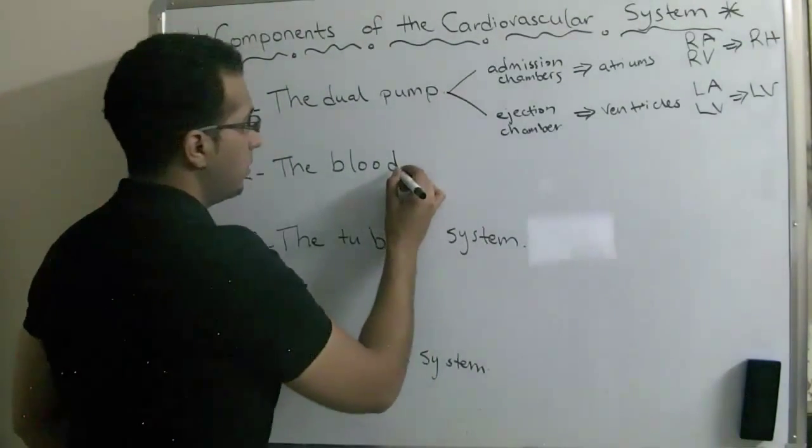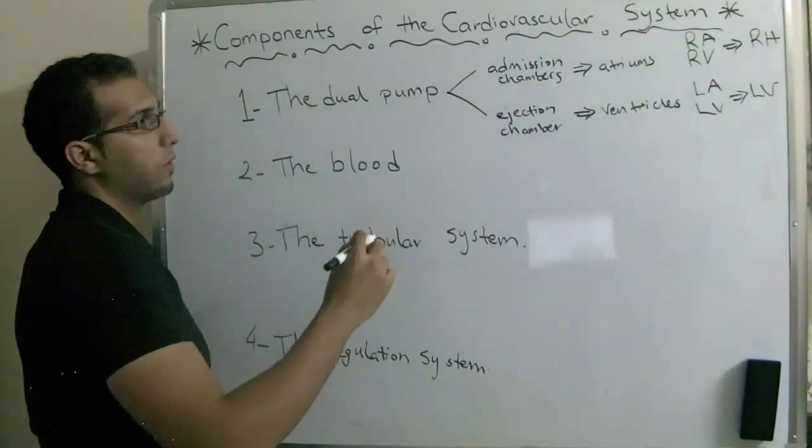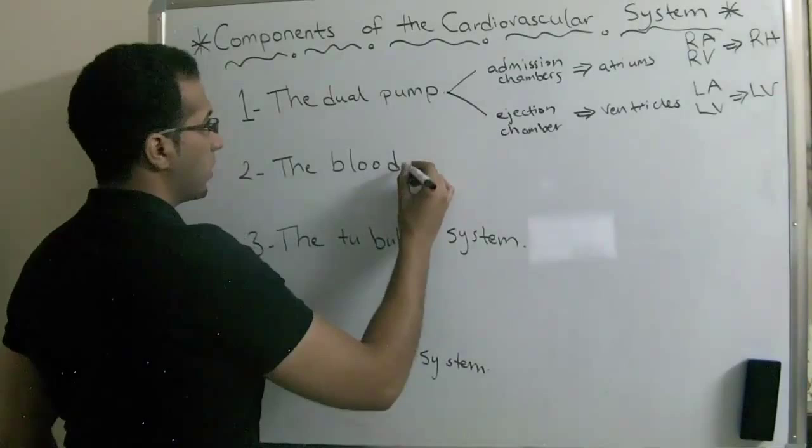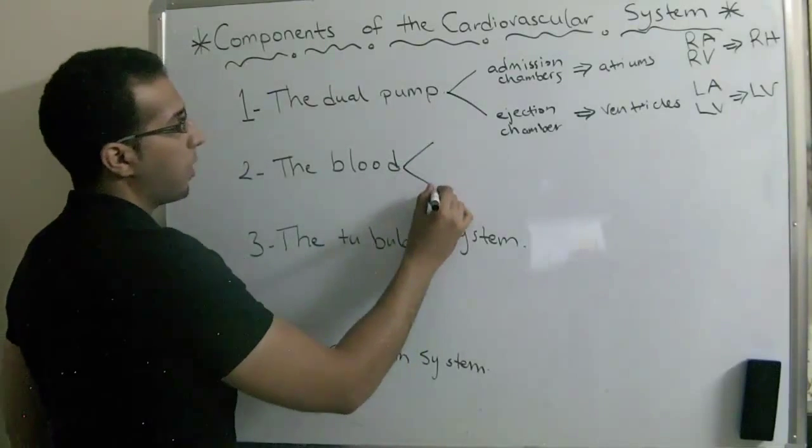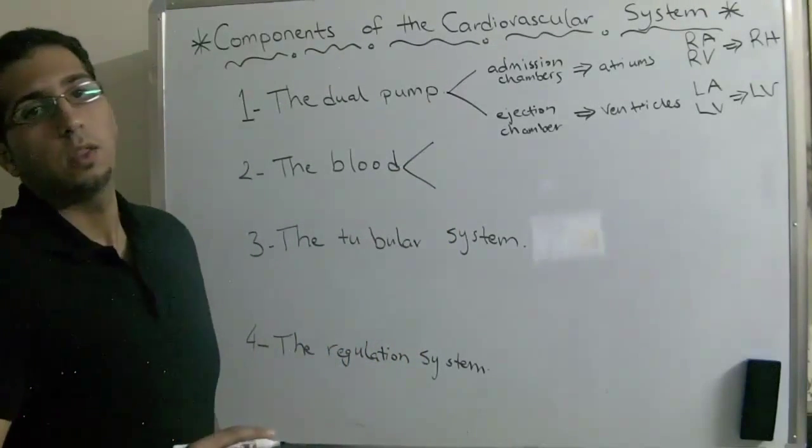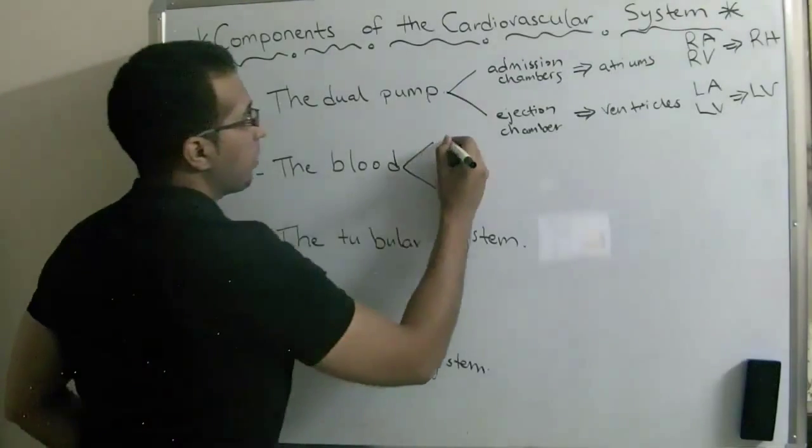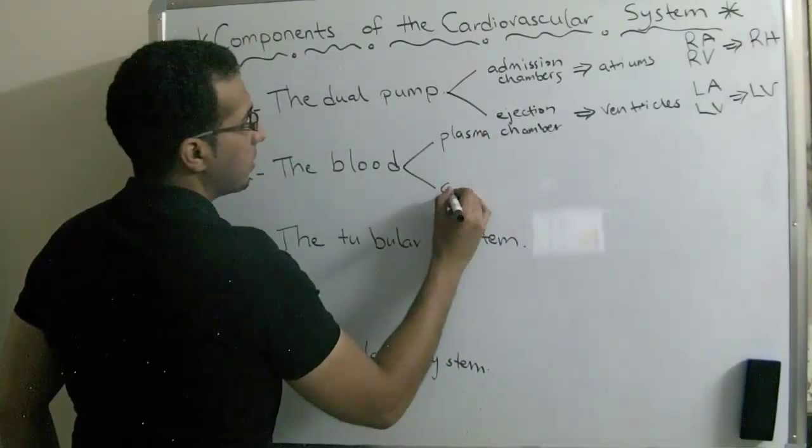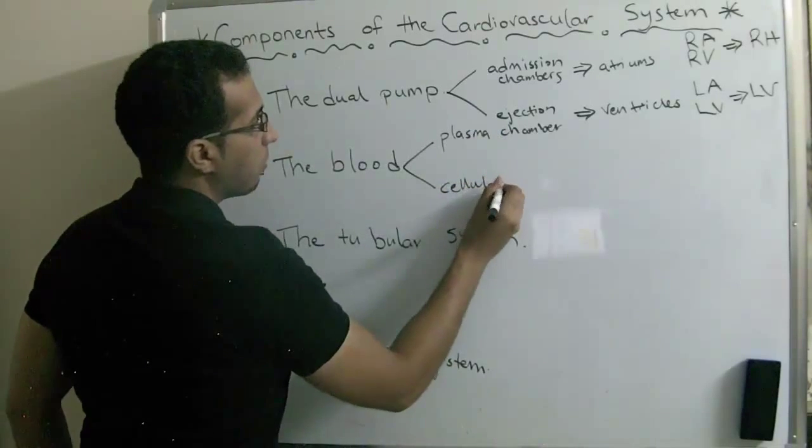For the blood, the second component of the cardiovascular system, it's divided into two parts. The blood is divided into plasma and cellular components.